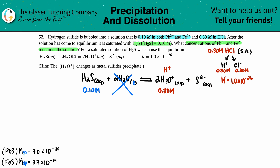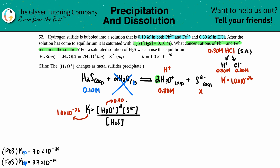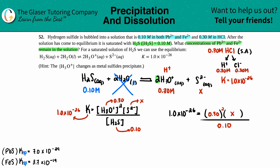Now we can solve for [S²⁻], labeled as x. The K expression is: K = [H₃O⁺]² × [S²⁻] / [H₂S]. Plugging in: 1.0×10⁻²⁶ = (0.30)² × x / 0.10.